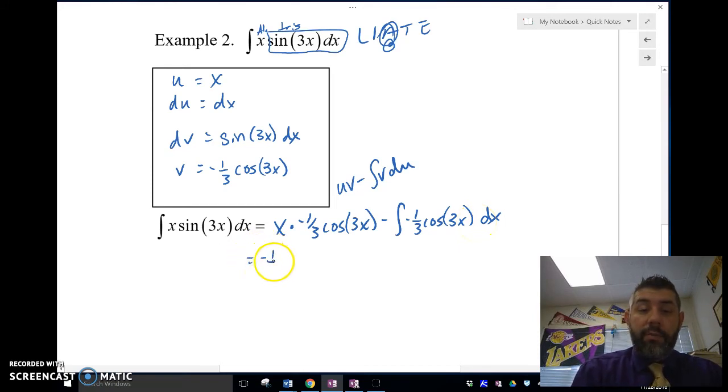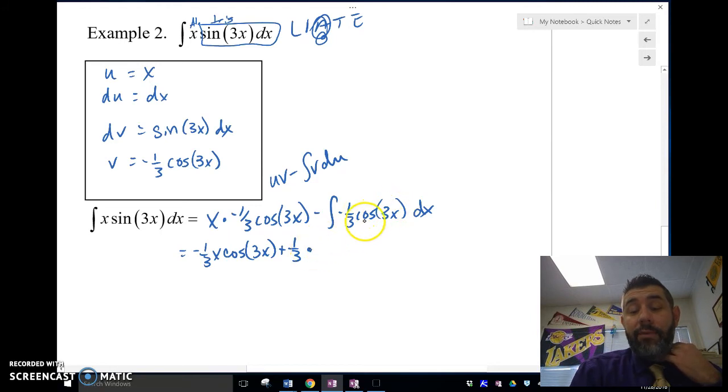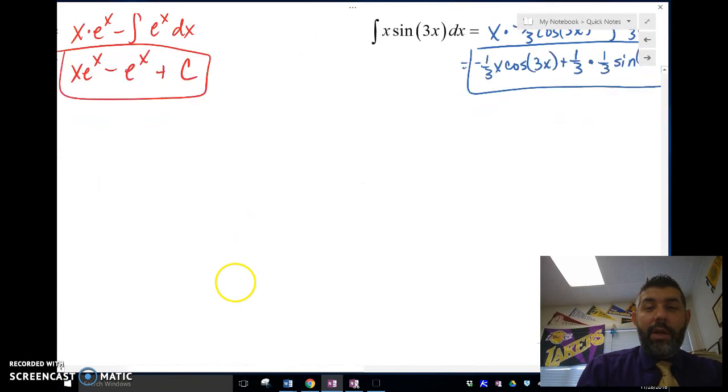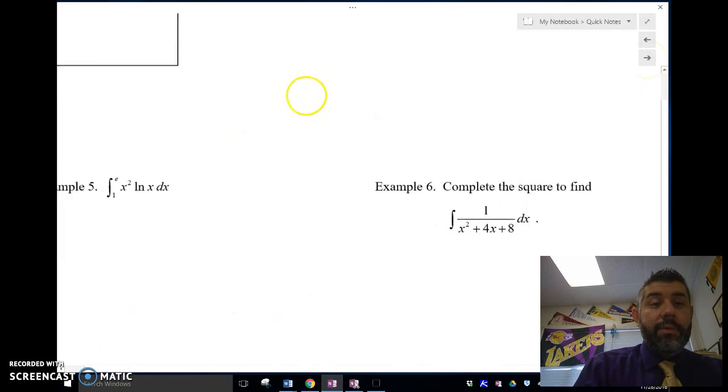So now we've got the integral is going to be ultraviolet voodoo. So uv, x times negative 1/3 cos(3x), minus v times du, which is just dx. So I'm going to get negative 1/3 x cos(3x) plus 1/3. Let's see, I'm going to have another third here when I multiply, when I have that reverse chain rule. And then the antiderivative of cosine is sine plus c. So again, ultraviolet voodoo, use LIATE however you want to pronounce that.